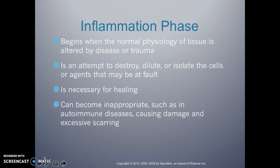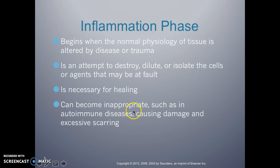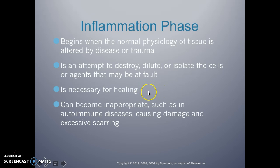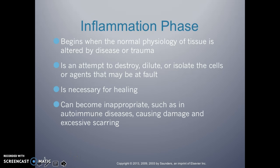The inflammation phase begins when the normal physiology of tissues is altered by disease or trauma. It attempts to destroy, dilute, or isolate cells or agents that may be at fault. You definitely need this phase for healing. It can be inappropriate — such as in autoimmune diseases causing damage and excessive scarring — but in most cases the inflammatory phase is necessary for healing. Without this knowledge, you can actually exacerbate and prolong the ability to heal.